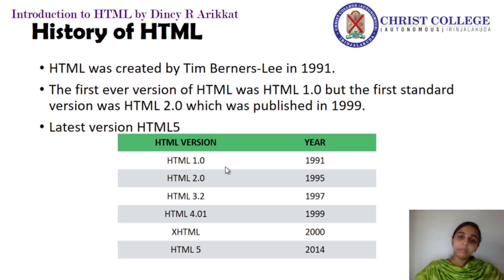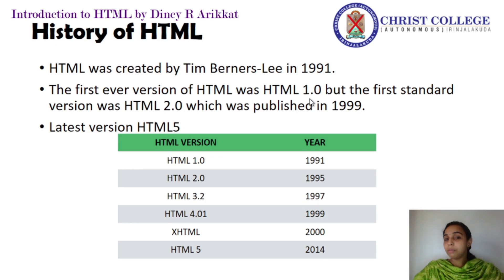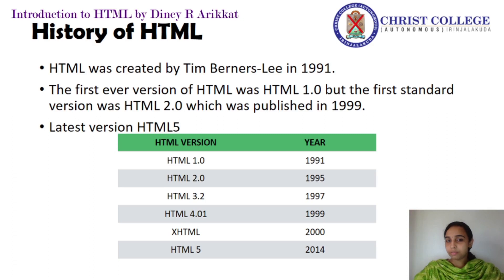Now let us see the history of HTML. HTML was created by Tim Berners-Lee in 1991, and the first ever version of HTML was HTML 1.0. But the standard version was HTML 2.0. Later came HTML 3.2, HTML 4.01, and the latest version is HTML 5.